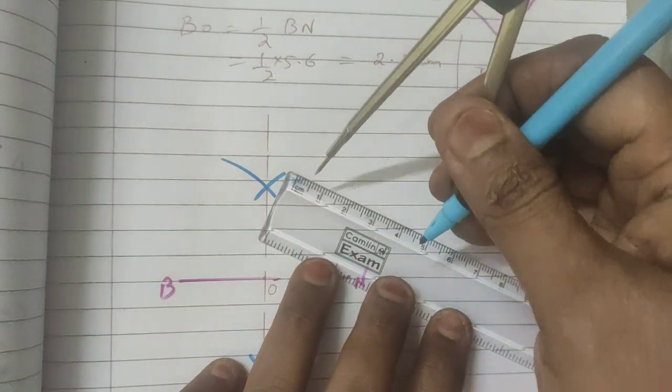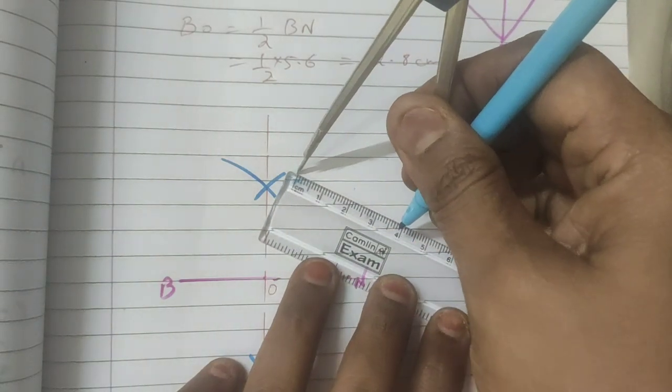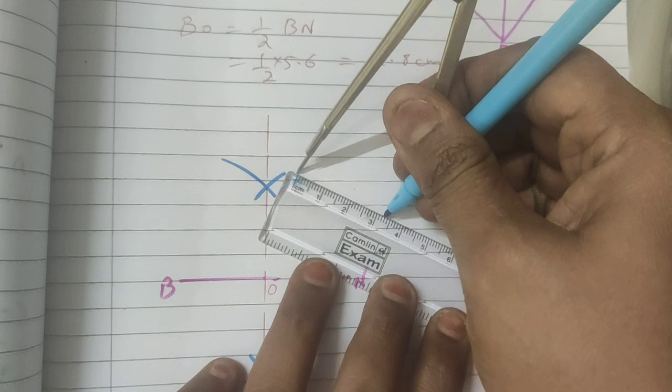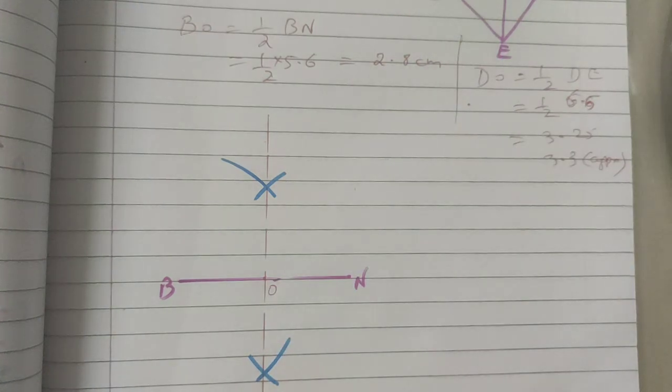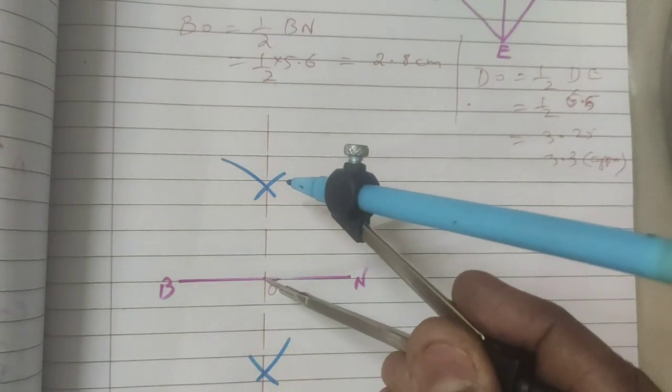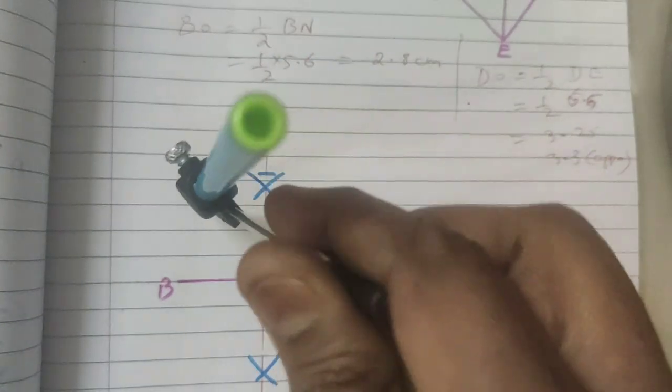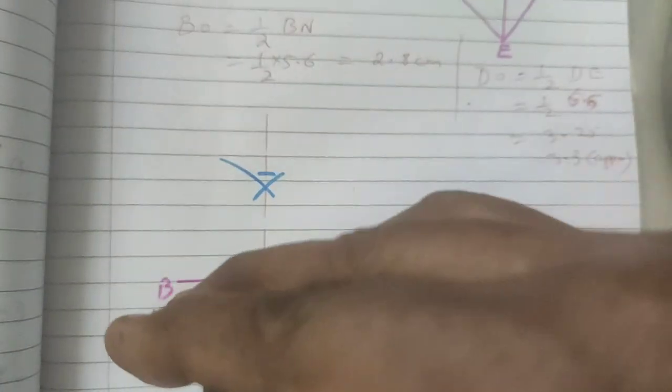So measure 3.3 cm in your compass. Keep your compass needle at the center.